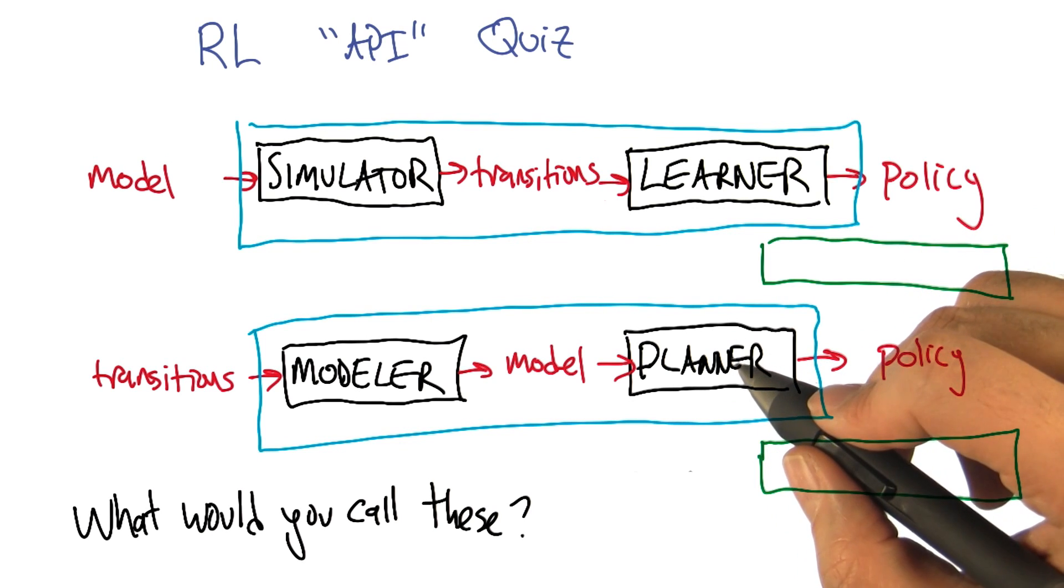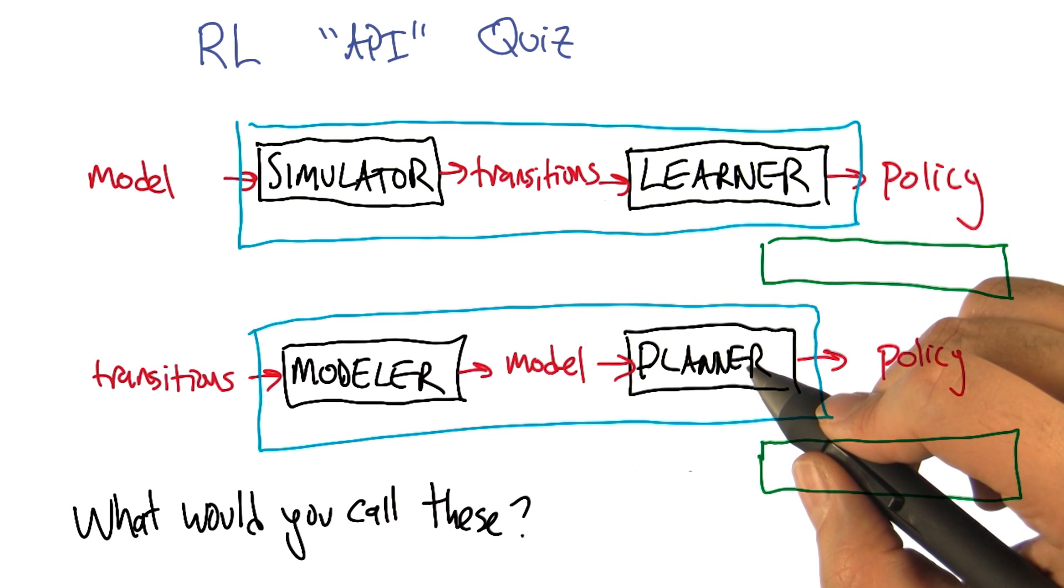You didn't talk about those planners. What's the name of the algorithms you described last time? Value iteration and policy iteration. Yes, right.